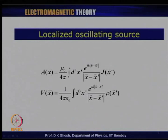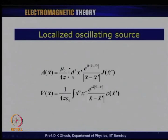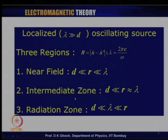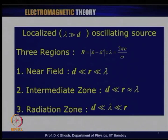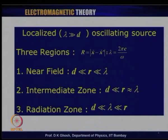Last time we were talking about a localized oscillating source. We had seen the general expressions for the vector potential and the scalar potential corresponding to a current distribution and a charge distribution. For an oscillating source, fields go as e to the power i omega t, and we divide our region of interest into three. The first is the near field, where the dimension of the source d is much less than the observation distance r, which is still less than the wavelength lambda. There is an intermediate zone where r is of the order of lambda.